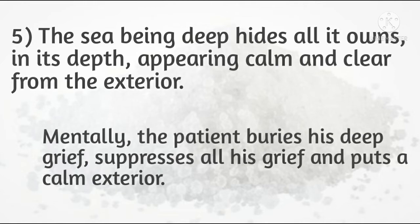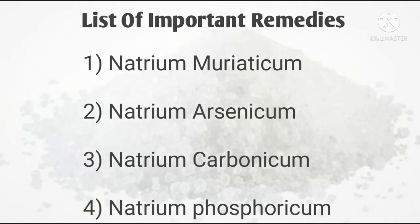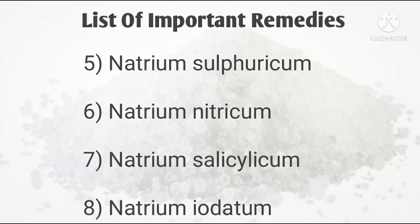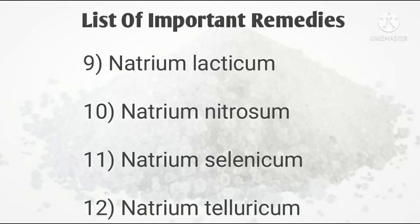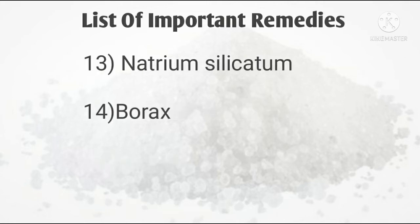The next is the list of important remedies of the Natrium group. Natrium is also spelled N-A-T-R-U-M, so both spellings are used — don't get confused. The remedies include: Natrium muriaticum, Natrium arsenicum, Natrium carbonicum, Natrium phosphoricum, Natrium nitricum, Natrium salicylicum, Natrium iodatum, Natrium lacticum, Natrium nitrosum, Natrium selenicum, Natrium sulphuricum, Borax, and a few other less frequently used remedies.